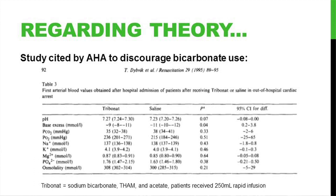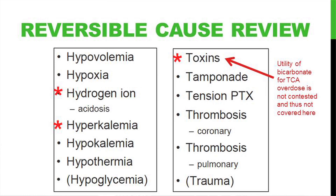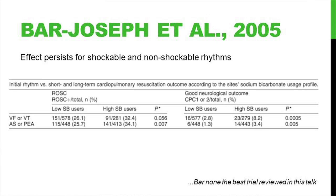Just a note on reversible causes: when you're running a code and you see PEA, you're thinking of your H's and T's. The items with stars next to them are the ones with any association with bicarbonate use. We've already talked a little bit about toxins — I'm not going to cover bicarb for tricyclic overdose because that's a well-established association. The hydrogen ion and hyperkalemia are the other relevant ones. That study by Bard-Joseph actually showed a persistent effect whether or not it was a shockable rhythm — even in the VF or VT group, it's just barely outside of statistical significance for ROSC, while the improvement with asystole or PEA arrest was significant, and good neurological outcome was statistically significant in both groups.